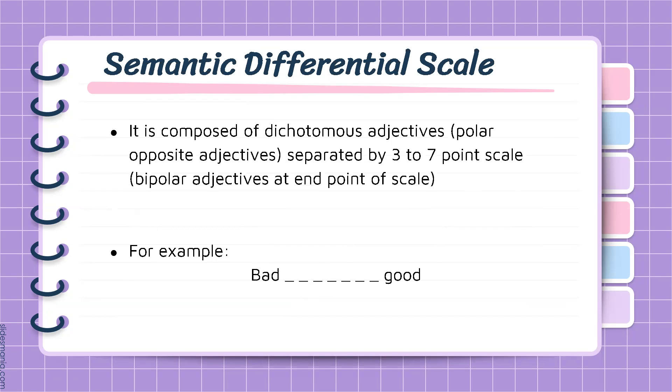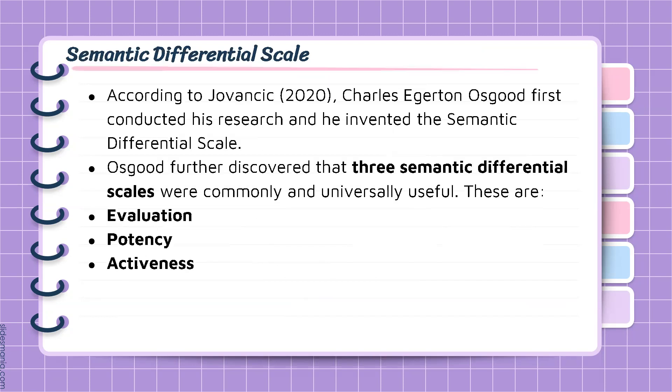For example, we have bipolar adjectives — bad and good — at the end points of the scale. Charles Egerton Osgood invented the Semantic Differential Scale, according to Duvancic. Osgood further discovered that three semantic differential scales were commonly and universally useful. These are evaluation, potency, and activeness.